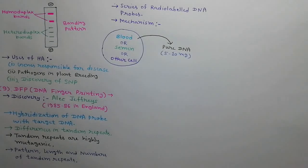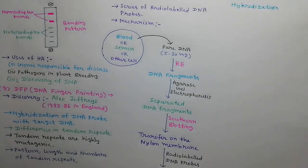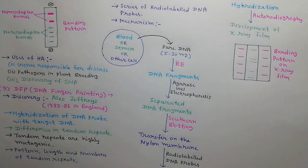5-10 mg pure DNA is extracted from blood or semen or other cell. DNA fragments are generated by treatment of restriction endonuclease. DNA fragments are separated by agarose gel electrophoresis. Now these DNA fragments are transferred on nylon membrane by southern blotting technique. Dip this nylon membrane into a solution of radio-labeled DNA probes so that hybridization can take place. Now perform autoradiography for this nylon membrane. As a result, bending pattern is obtained on x-ray film as shown in the diagram.